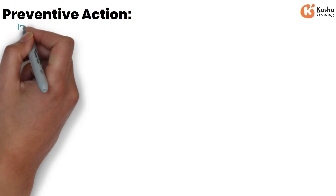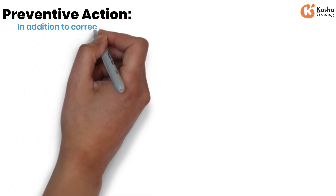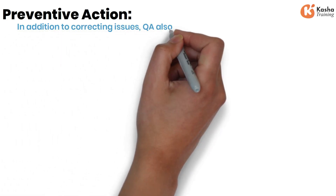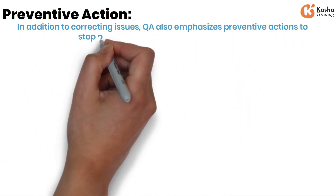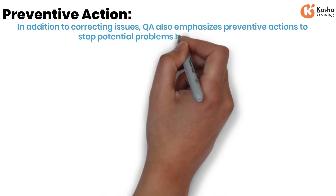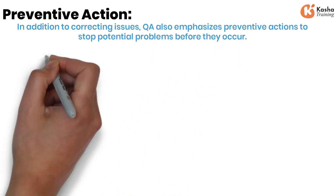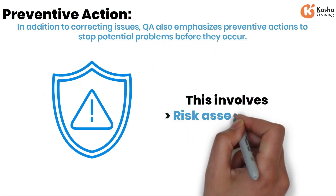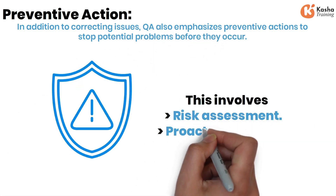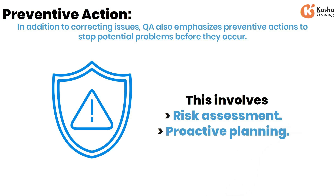Preventive Action. In addition to correcting issues, QA also emphasizes preventive actions to stop potential problems before they occur. This involves risk assessment and proactive planning.